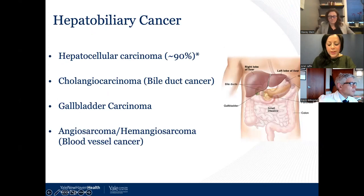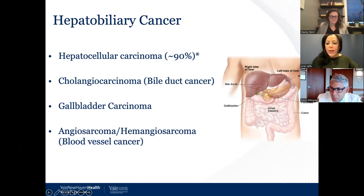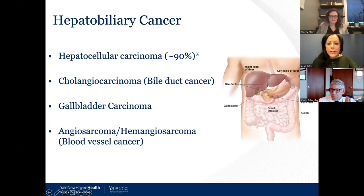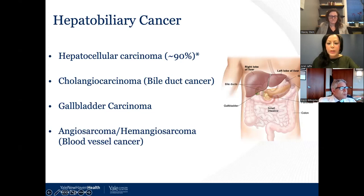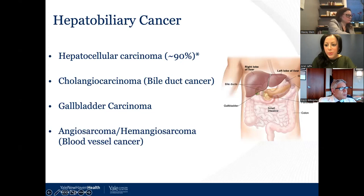Today's talk is really about liver cancer, which encompasses a few different types of cancers. The main focus will be on hepatocellular carcinoma, or HCC, which makes up about 90% of all primary liver cancers. Some of the same risk factors also lead to other types, including cholangiocarcinoma — which can include intra- and extra-hepatic bile ducts — gallbladder cancer, and very rarely, angio- and hemangiosarcoma.